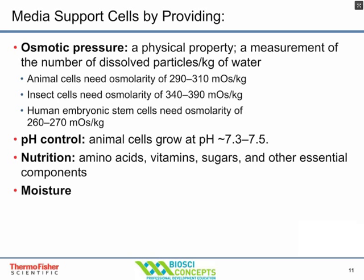pH control is important, and animal cells grow at a pH around neutral. Animal cell culture uses sodium bicarbonate to maintain the correct pH of the culture. Media also provides nutrition through amino acids, vitamins, sugars, and other essential components.